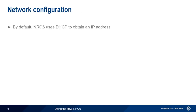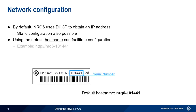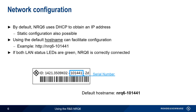By default, the NRQ uses DHCP to obtain an IP address, although it's possible to configure a static address as well. An easier way of accessing the NRQ is to use a default hostname, which is made up of the six-digit NRQ serial number appended to the string 'NRQ6-'. One last tip: if both LAN status LEDs are green, this means that the NRQ is correctly connected.